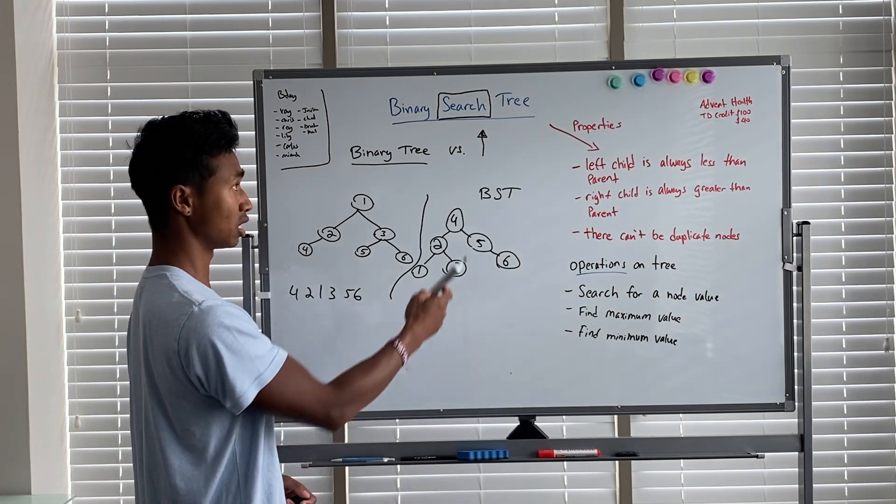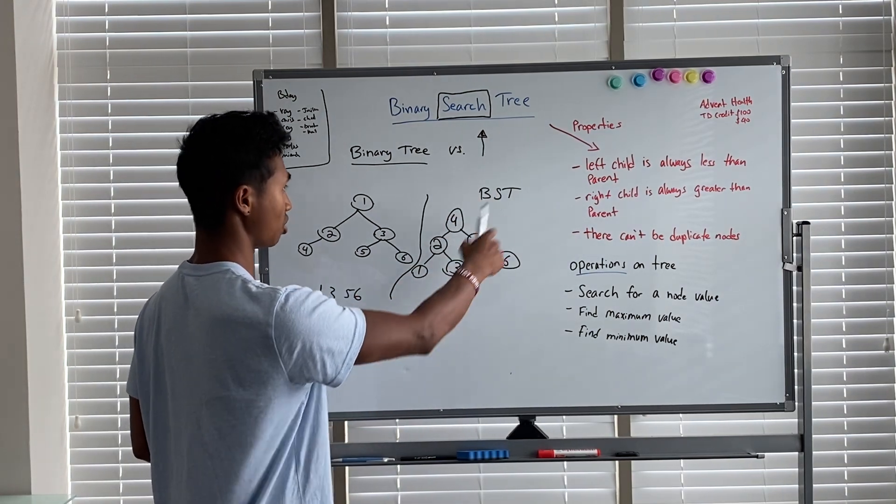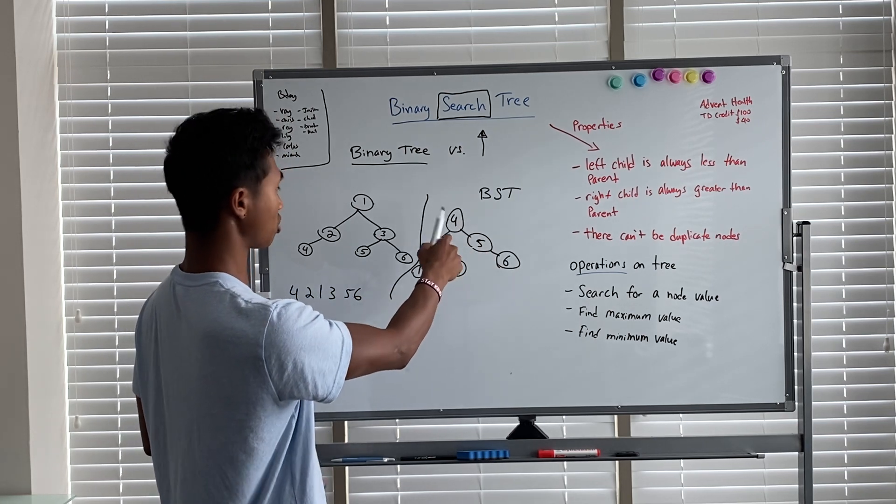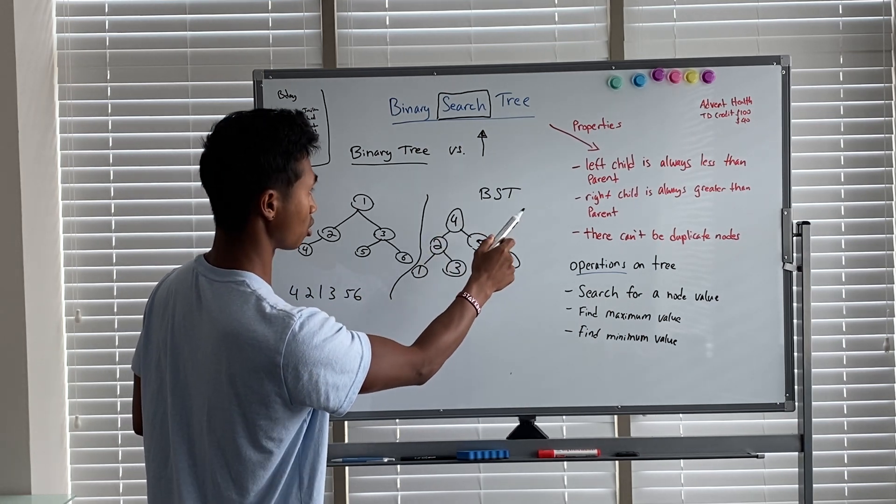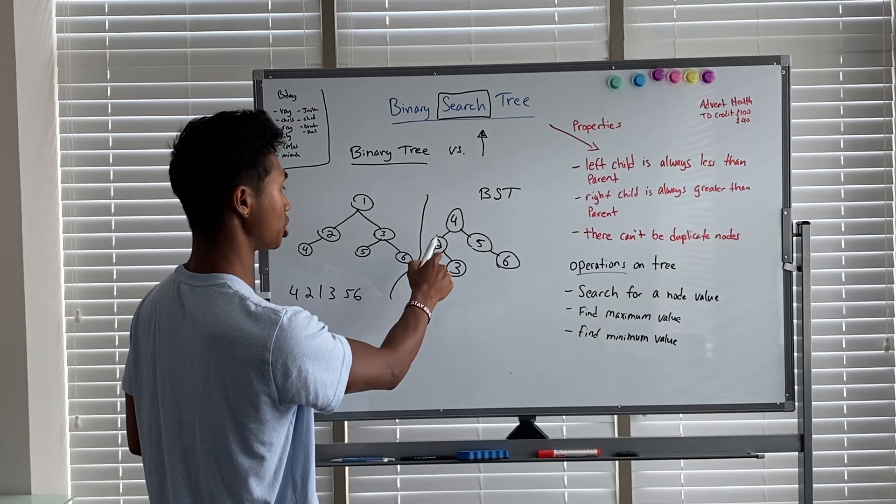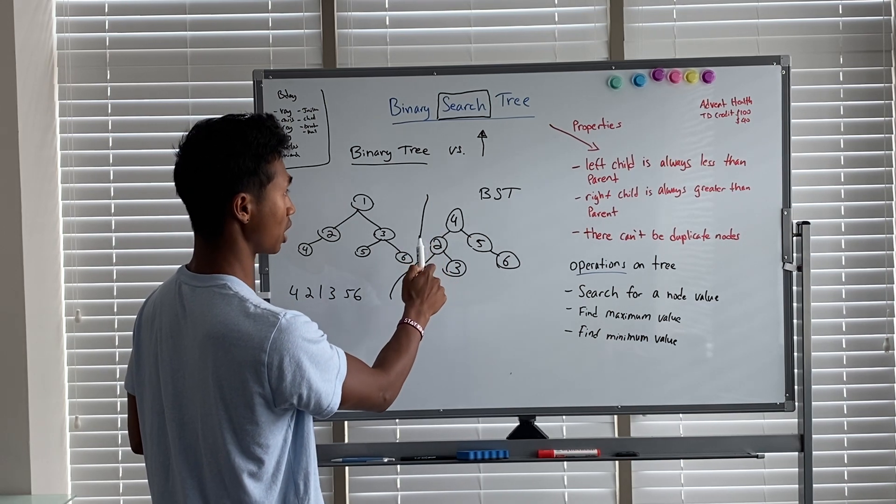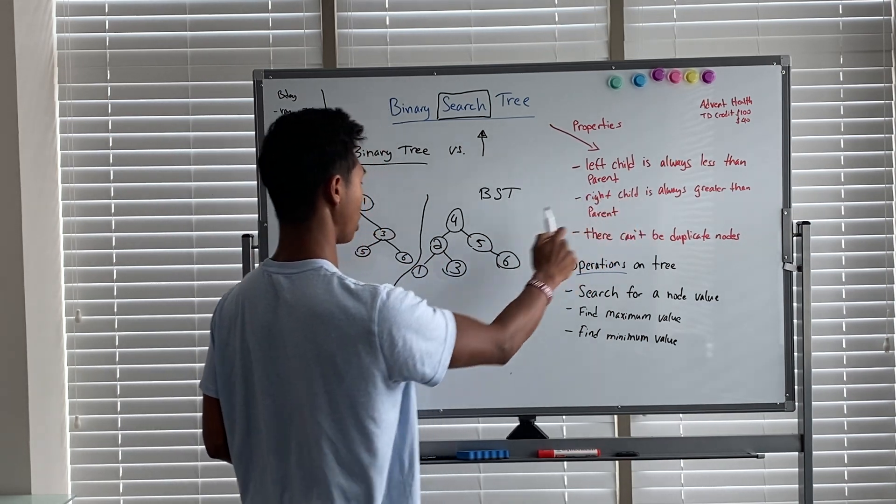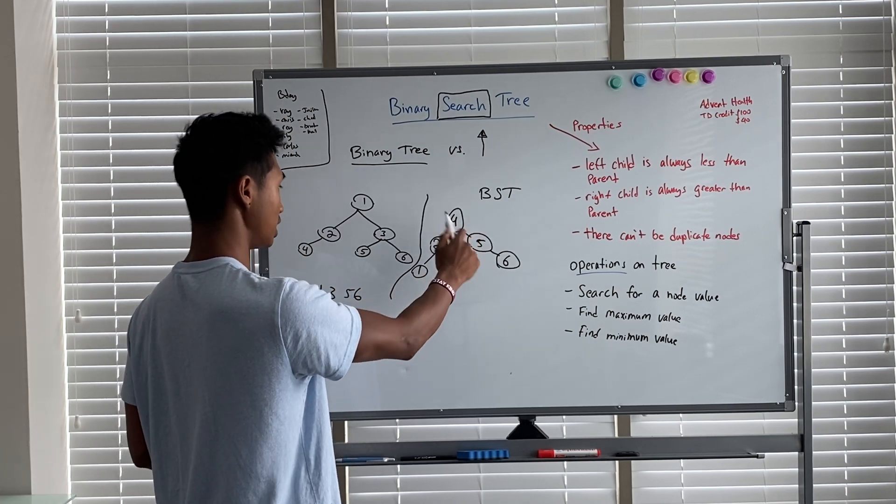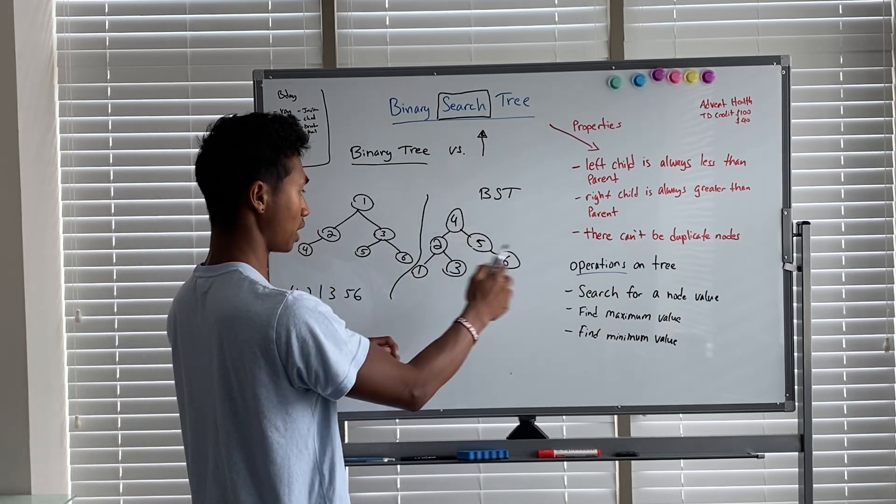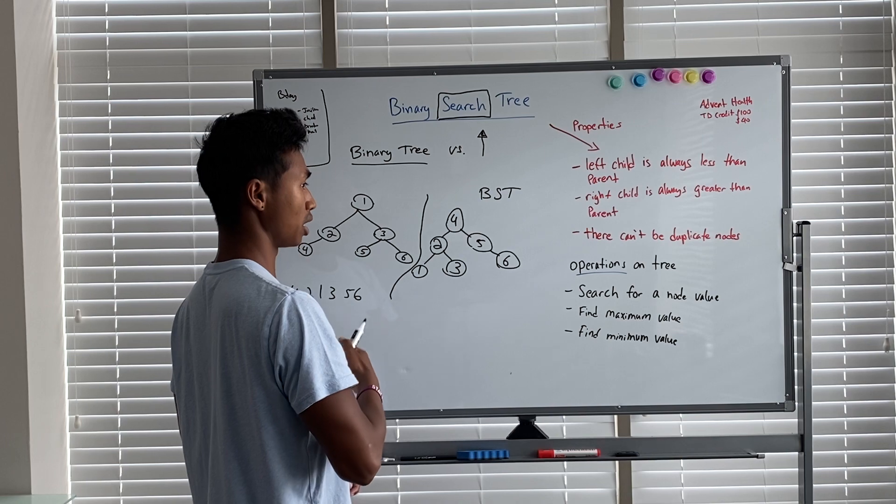Let's see if this tree satisfies these three properties. Four is the root, so that's fine. The left child of four is two. Is two a left child that is less than the parent? Is two less than four? Yes. These properties have to be the same